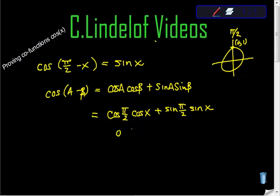So that gives us zero times cosine x, plus sine of pi halves, which is one, times sine x. It works out cleanly: zero times cosine x is zero, plus one times sine x equals sine x.